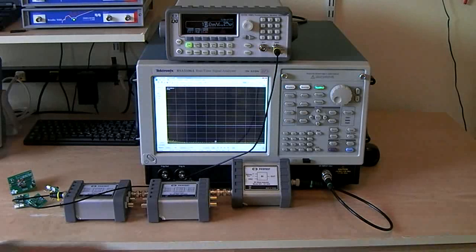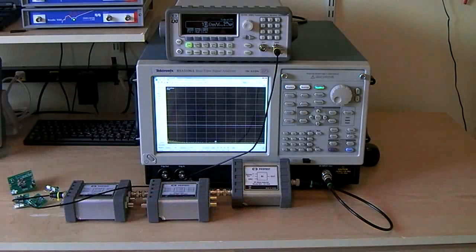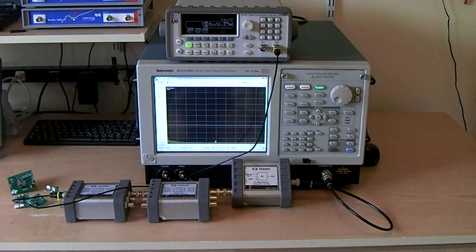We're also using the PicoTest J2130 bias injector in order to provide 100 Hz bandwidth coupling to the RSA, just to keep the DC out of the RSA.